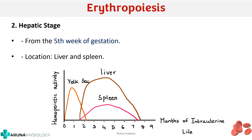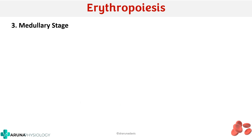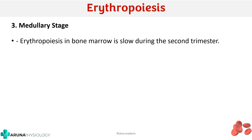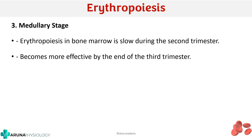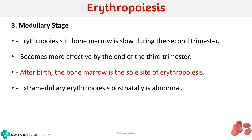After the hepatic stage, we have the medullary stage. From the fifth month of intrauterine life onwards, bone marrow becomes the site of erythropoiesis. Production from the bone marrow increases, and even after birth, bone marrow remains the site. Initially it is slower during the second trimester, but from the third trimester it becomes more effective, and after birth, bone marrow is the sole site of erythropoiesis. Any other sites postnatally are considered abnormal — that is why extra-medullary erythropoiesis postnatally is abnormal.